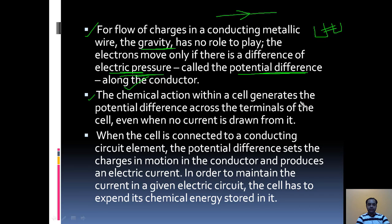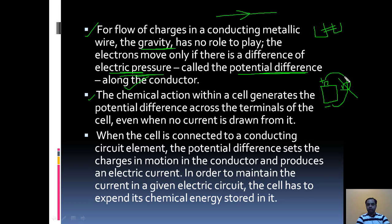The chemical action within a cell generates the potential difference across the terminals of the cell, even when no current is drawn from it. Suppose we take a cell — this is the positive terminal and this is the negative terminal. There will always be a potential difference, an energy difference, between these two terminals, although it is not connected through a conducting wire with some load. This is because the chemical action within that cell itself generates the potential difference. This cell is made up of different types of chemicals, and the action done by those chemicals generates the potential difference.